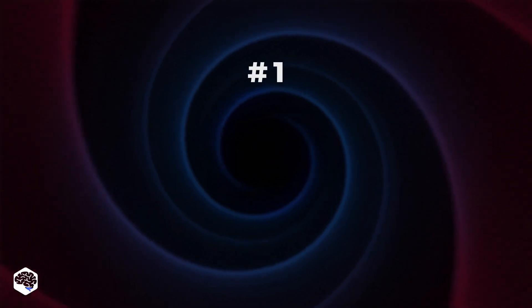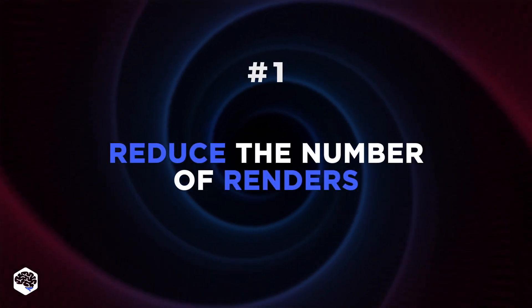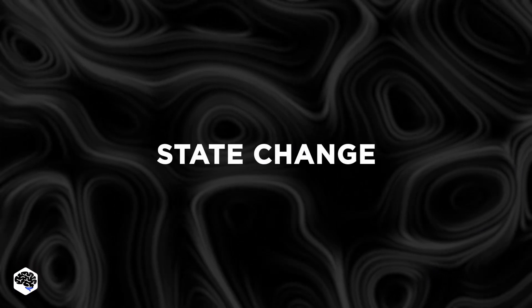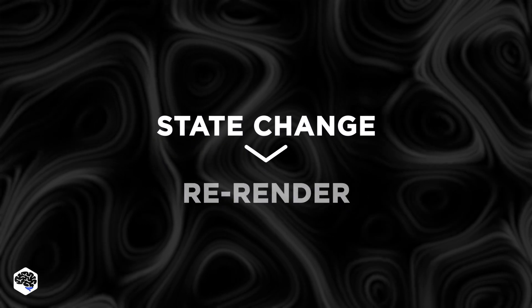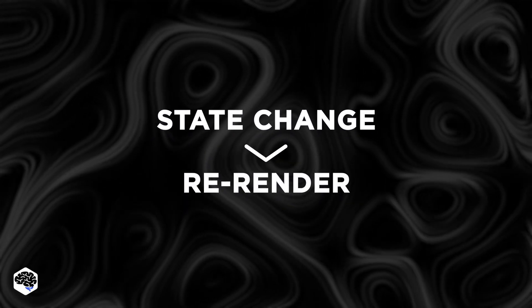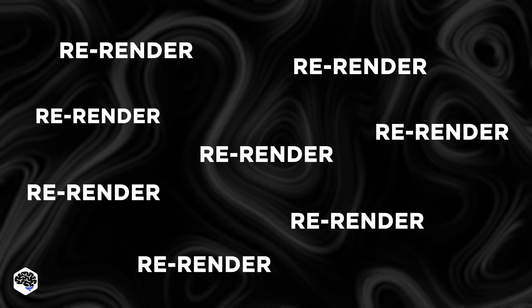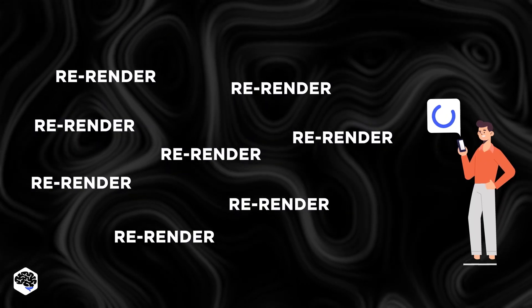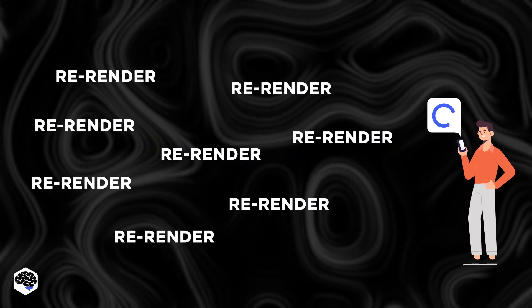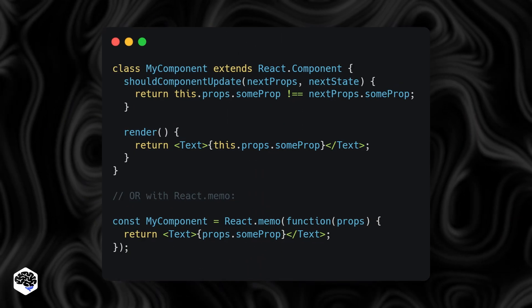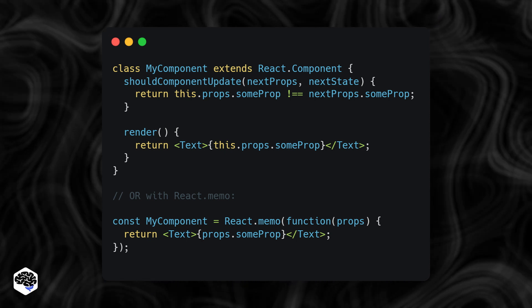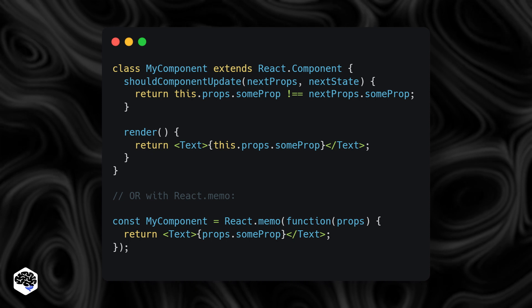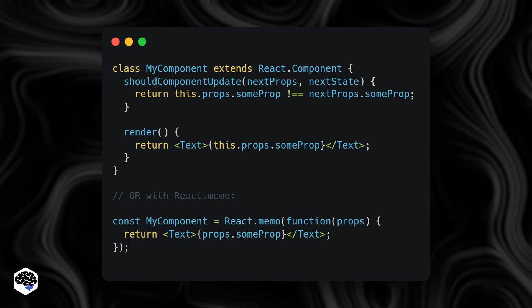The first tip is to reduce the number of renders. In React Native, every time the state or props of a component change, it triggers a re-render. This can be costly if you have a lot of components or if your component tree is deep. To optimize performance, try to reduce the number of renders by using ShouldComponentUpdate or React.Memo to prevent unnecessary re-renders.